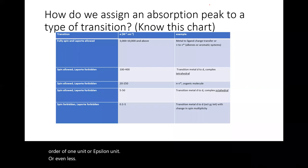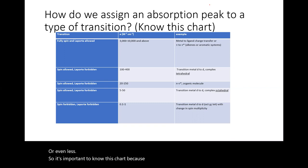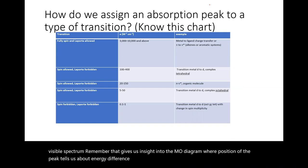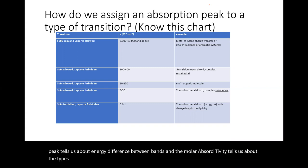It's important to know this chart because it tells us how to assign transitions in a UV-visible spectrum. The position of the peak tells us about the energy difference between bands, and the molar absorptivity tells us about the types of orbitals between which the electron is moving.